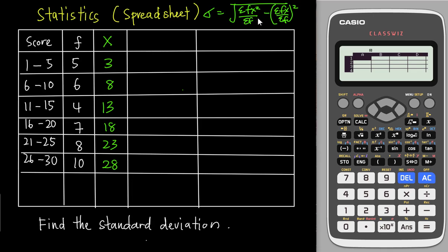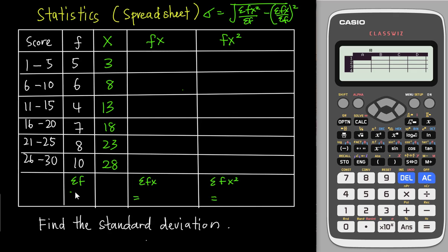Based on this formula, I need to find fx, then sum all the fx values to get sum of fx. After that, I need to find fx² for each row, then sum them all to get sum of fx². I also need sum of f. Once I have all these numbers, I can plug them into the formula and eventually get my standard deviation.